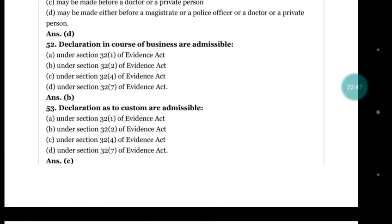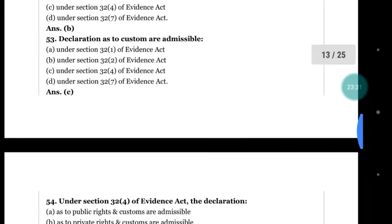Question number 52: declarations in the course of business are admissible under — (a) section 32 clause 1; (b) section 32 clause 2; (c) section 34 clause 4; (d) section 37 clause 7. The right answer is (b) under section 32 clause 2 of the Evidence Act.